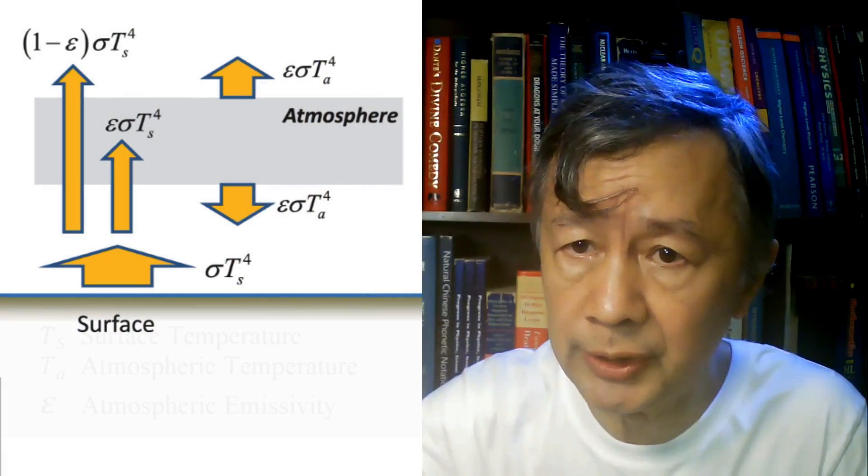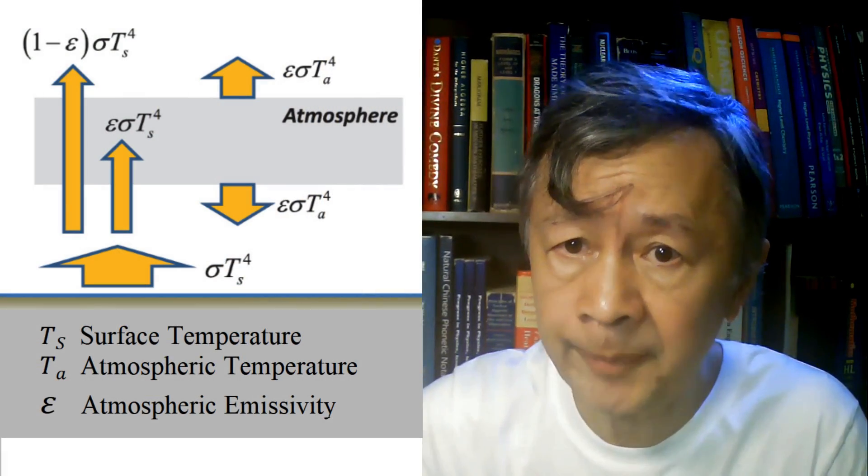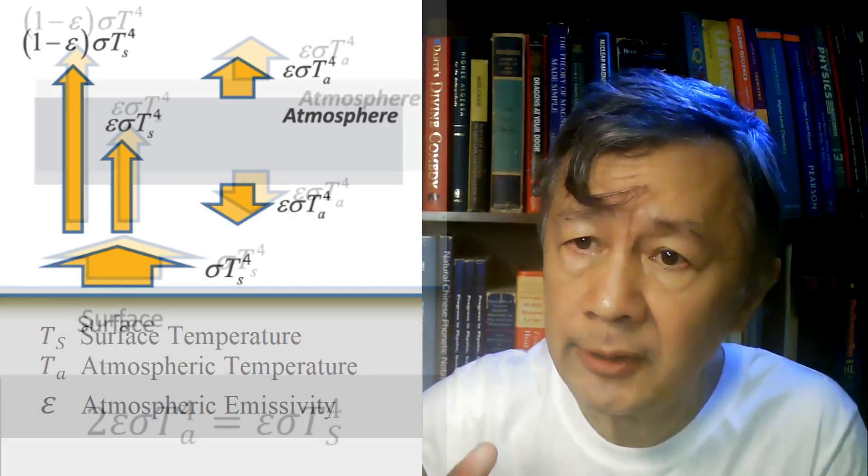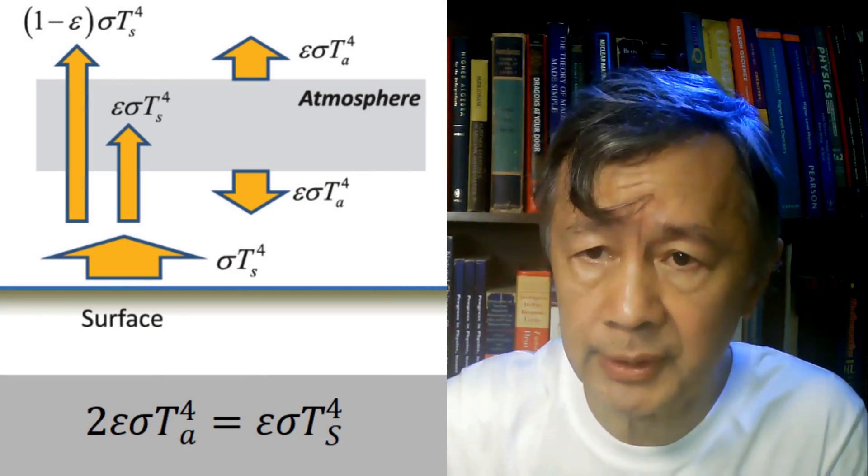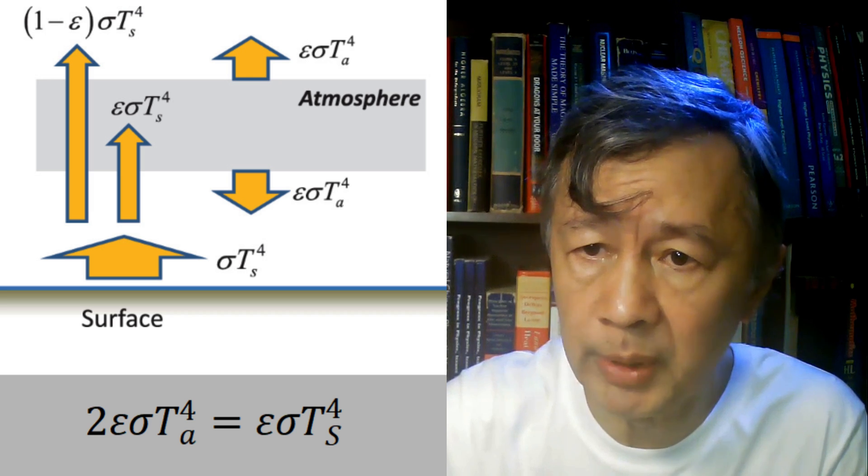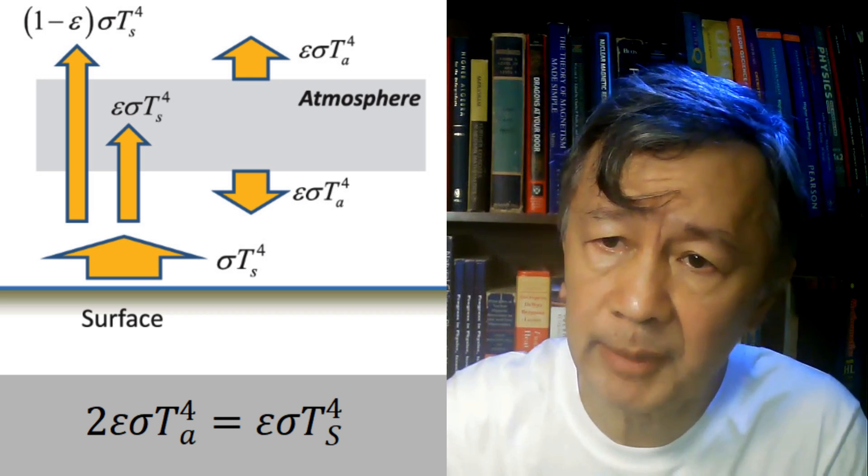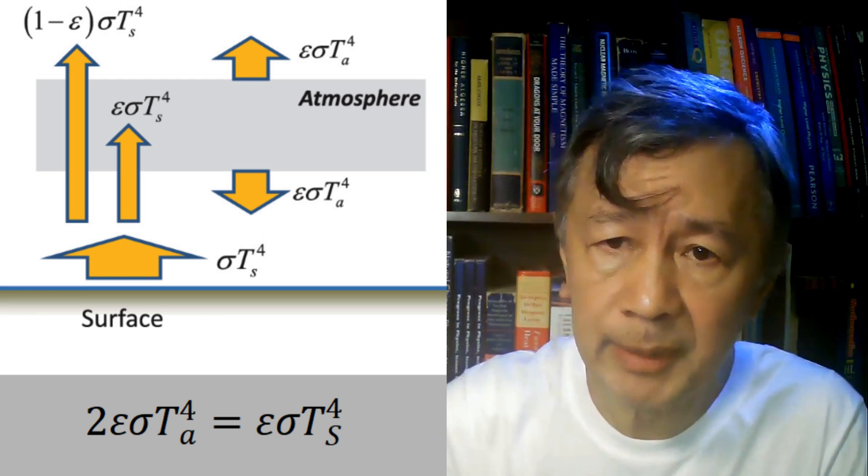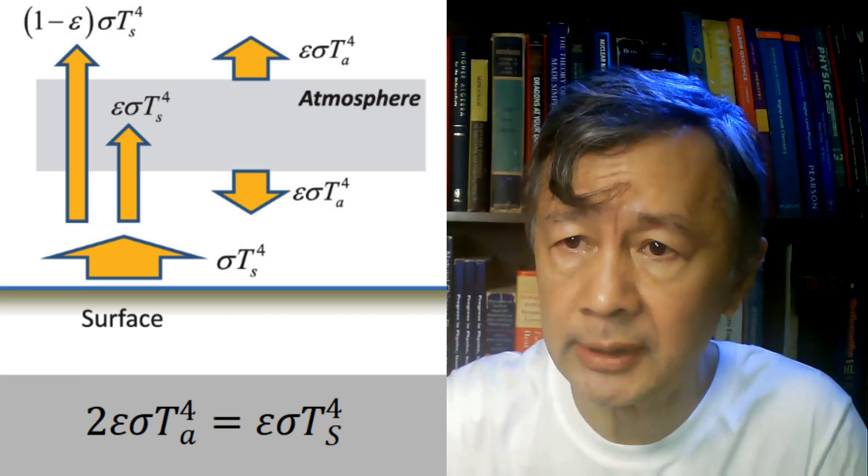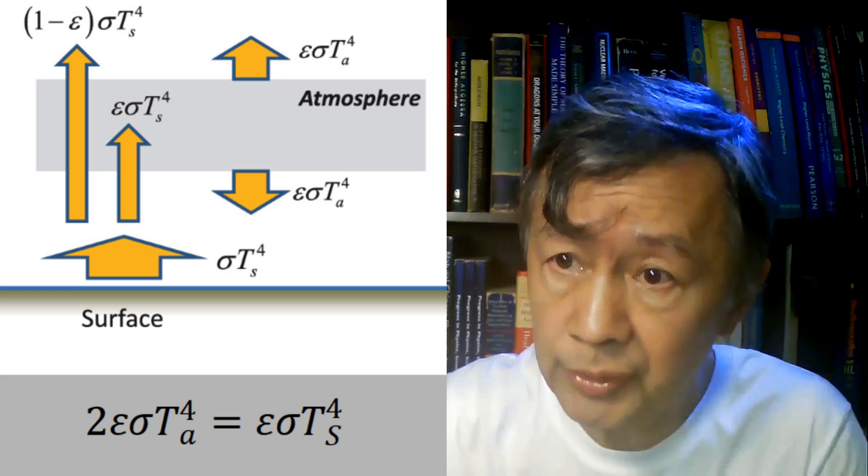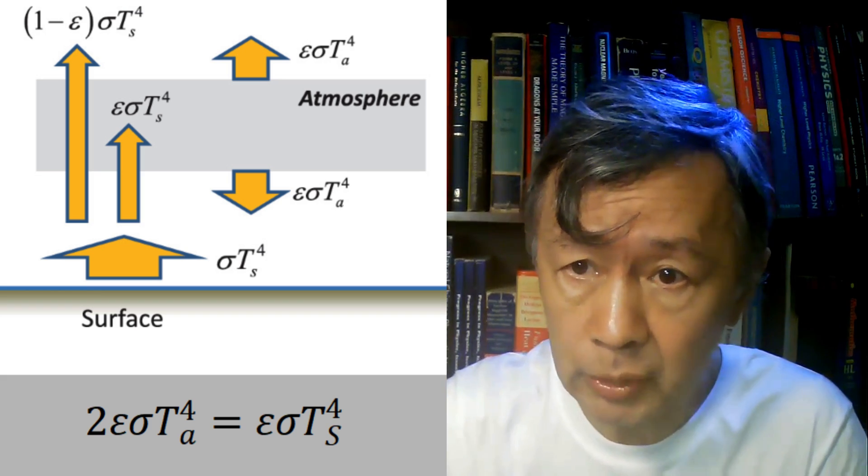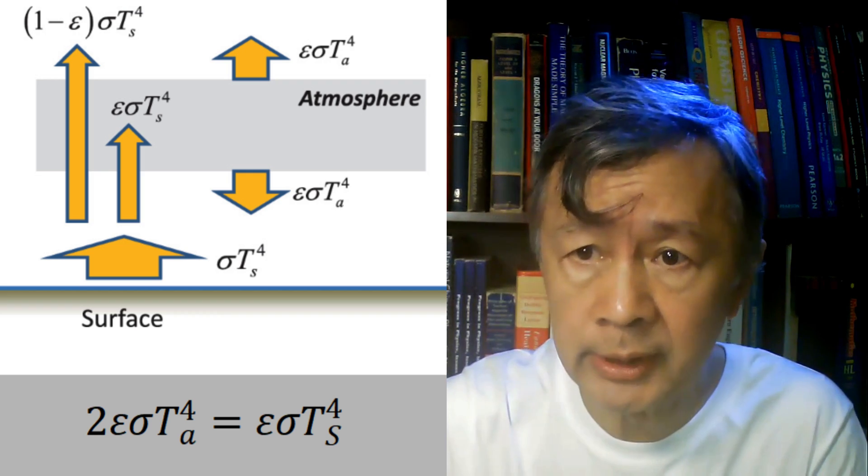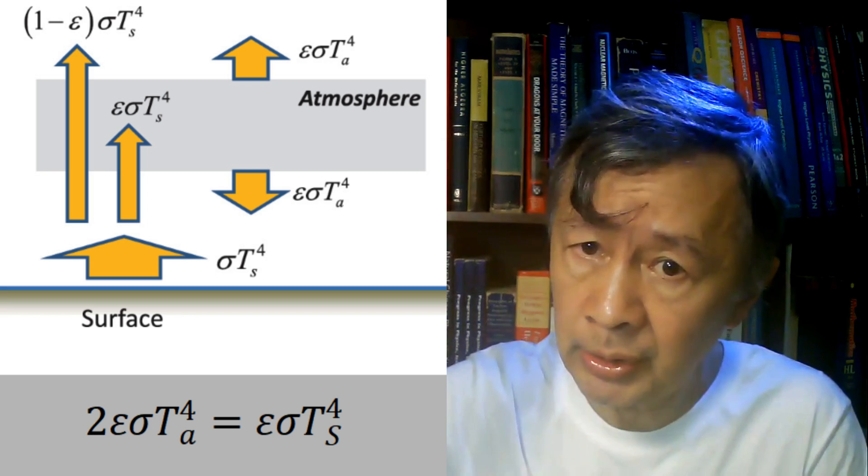Using epsilon to denote the emissivity of the atmosphere layer, which also denotes the absorptivity according to Kirchhoff's law, the following equation is introduced: 2 epsilon sigma T_a to the power of 4 equal to epsilon sigma T_s to the power of 4, where sigma is Stefan-Boltzmann's constant. Notice, the factor 2 suggests that the layer of their model atmosphere can radiate in two vertical directions, downward to the surface and upward to the space.